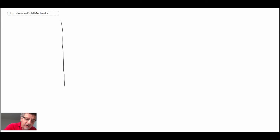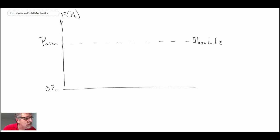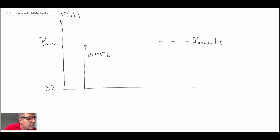Let's take a look at a diagram showing the different pressures. On the vertical axis I'm going to plot pressure. First, let's place atmospheric pressure on the diagram — and down here would be zero pascals. Atmospheric pressure is typically 14.7 psi or 101,325 pascals, and we'll denote that as P atm.